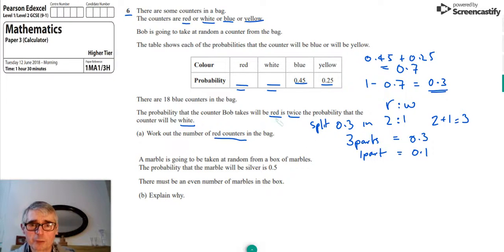Because we know that red is the one that's represented by the 2, then two parts, which is the probability of getting red, is equal to 2 times 0.1, which is 0.2. So we can put that in our table, and we can also put in the probability of getting a white, and that's going to be 0.1.